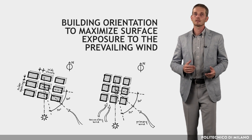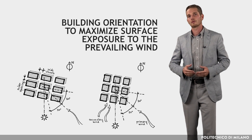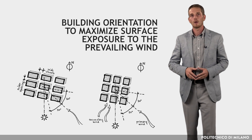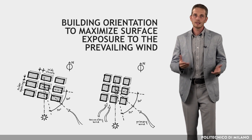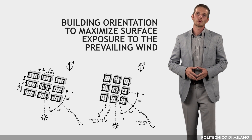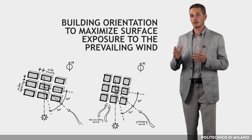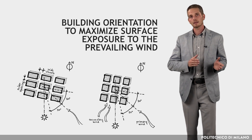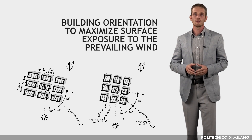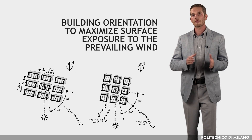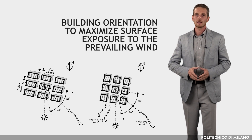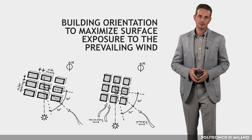Let's summarize some recommendations for best exploiting natural ventilation. The building should be oriented to maximize surface exposure to prevailing winds. However, a building does not necessarily need to be oriented perpendicular to the prevailing wind. It may be oriented to any convenient angle between 0 and 30 degrees without losing any beneficial aspects of the breeze.